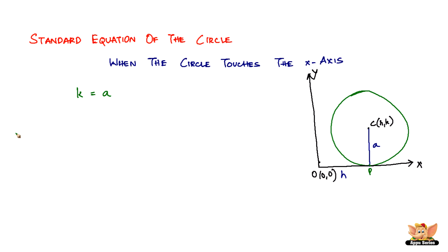So how does this affect the standard equation? We have x minus h the whole square plus y minus k the whole square equal to a square. So when k becomes a, we have something like this.